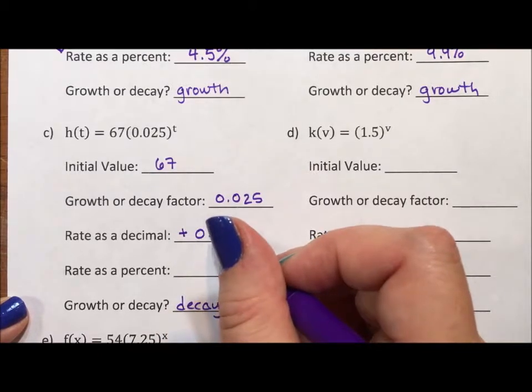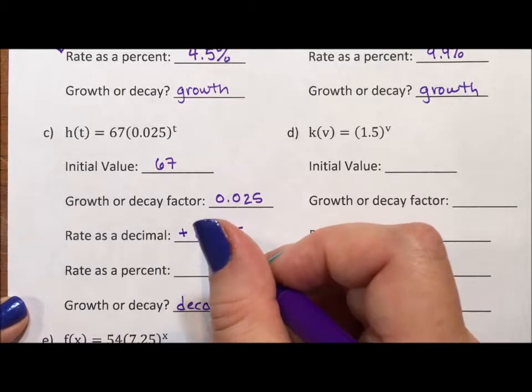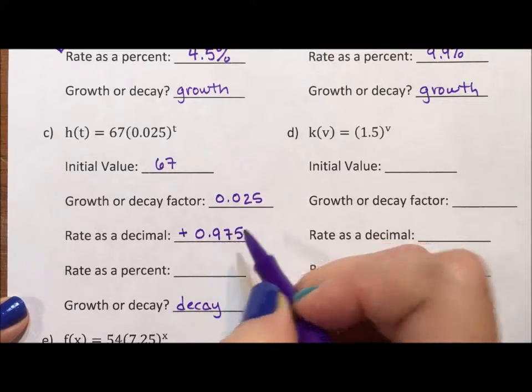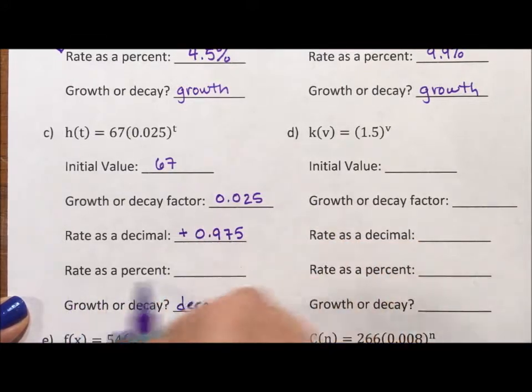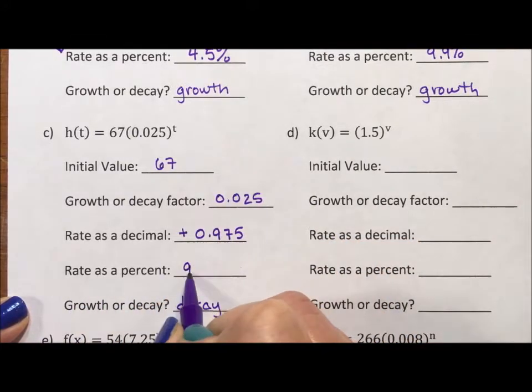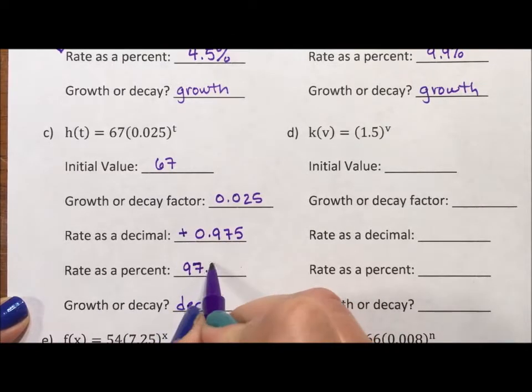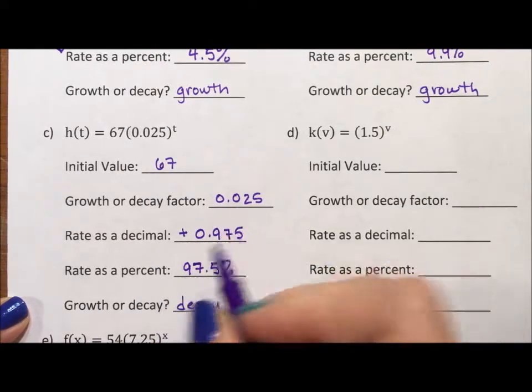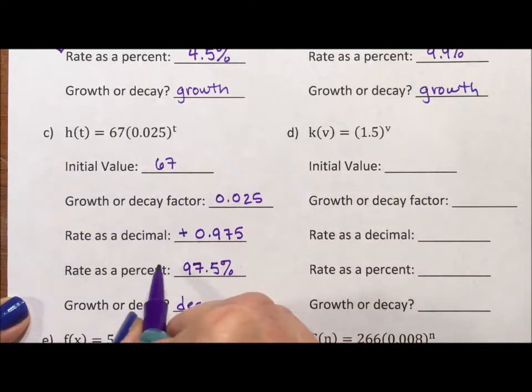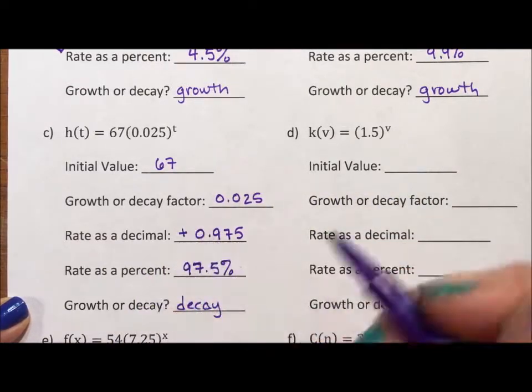That's a really fluid point there. Some teachers want the negative. Some do not. If I go to a percent, I multiply by 100 to get 97.5% positive or negative, depending on if you're keeping it as a negative because it's decay or if you're making it positive.